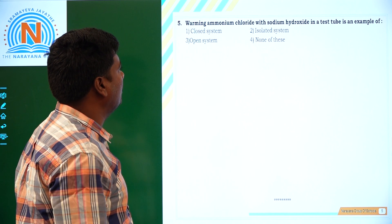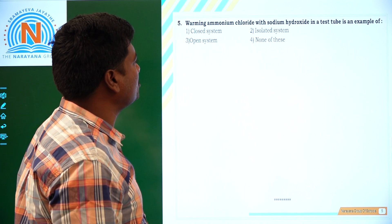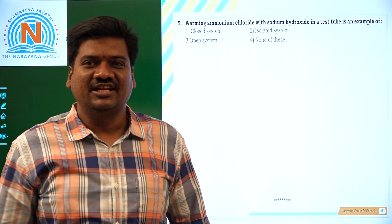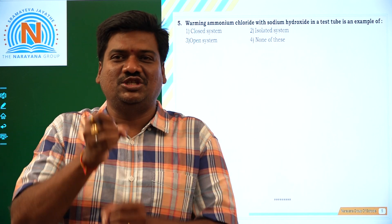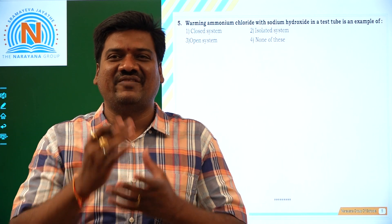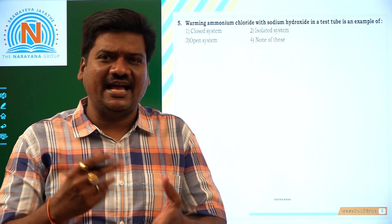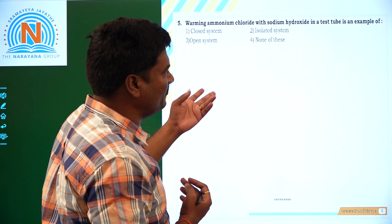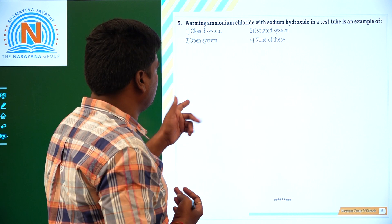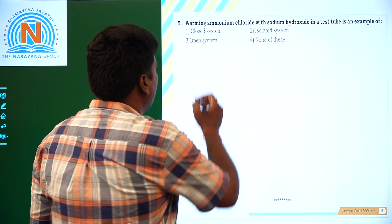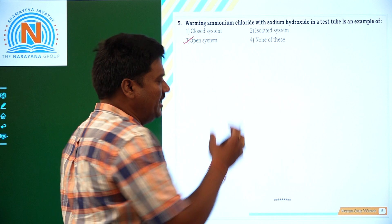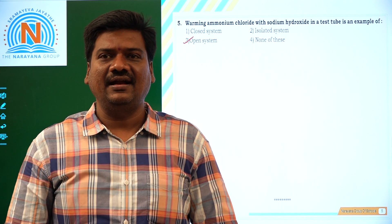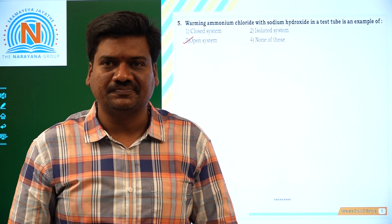Now come to the last question: where will the ammonium chloride and sodium hydroxide reaction happen in a test tube? The question itself has the answer — test tube. It is an open vessel. Means the reaction is happening in an open vessel, so the answer is it is an open vessel, not an open system. Like that we can discuss the questions. Thank you.